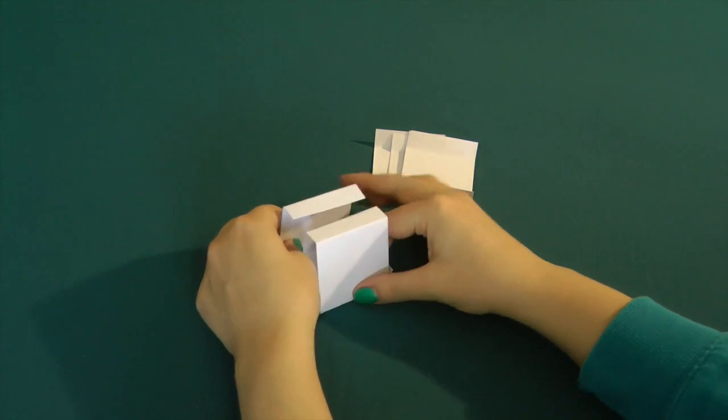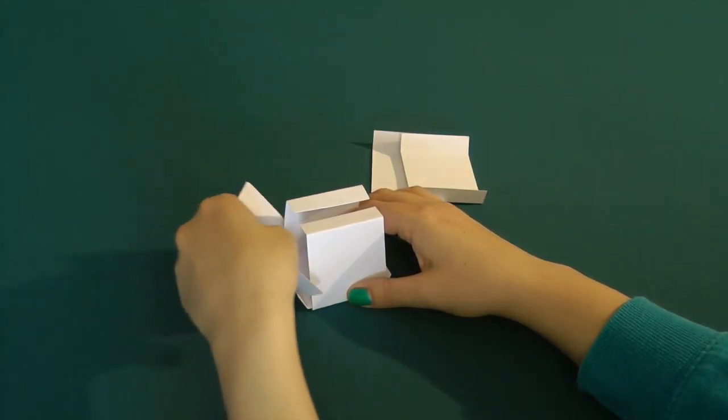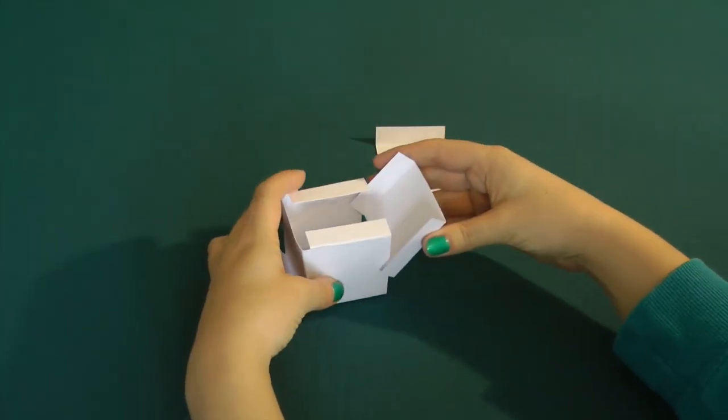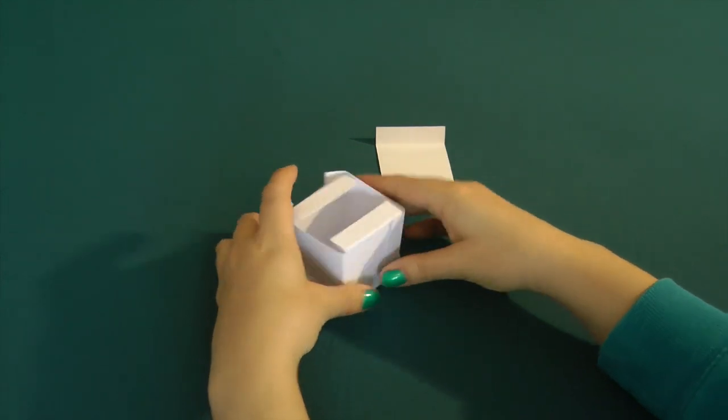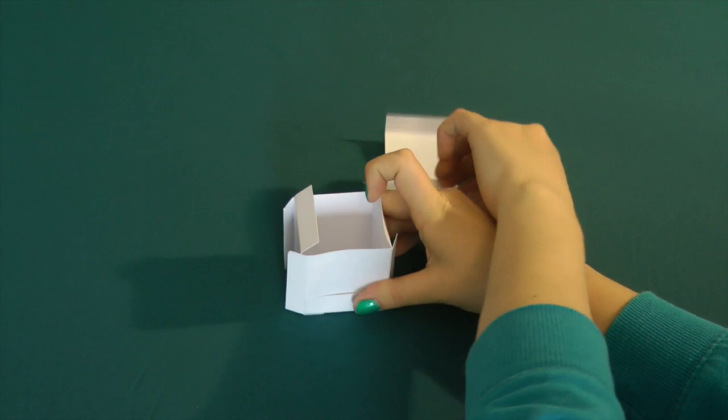You can then add a fourth card which runs horizontally, making sure that all of the tabs are still on the outside of the cube. A fifth card can then go opposite, again horizontally and with the tabs outside, and then there's space on top for a final card to complete your cube.